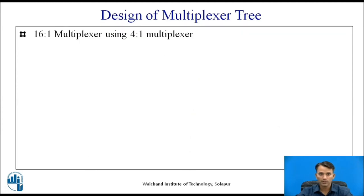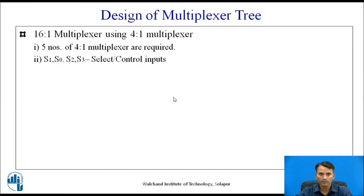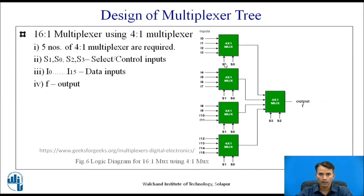Let us have one more example: a 16-to-1 multiplexer using 4-to-1 multiplexers. In this case, we require 5 numbers of 4-to-1 multiplexers, and the 16-to-1 multiplexer requires 4 select inputs as S0, S1, S2, S3, and 16 inputs i0 to i15, with f as the output. In the block diagram, four 4-to-1 multiplexers in the first row handle inputs i0 to i15 with common select inputs S1 and S0. The fifth 4-to-1 multiplexer uses select inputs S3 and S2. In this way, you can design any multiplexer tree using smaller multiplexers.